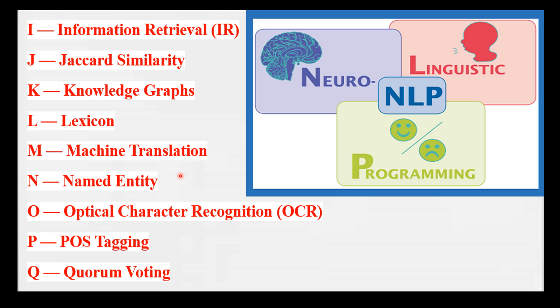O is for Optical Character Recognition, which converts scanned text into editable text. Imagine a tool that can turn a scanned book into a digital format.